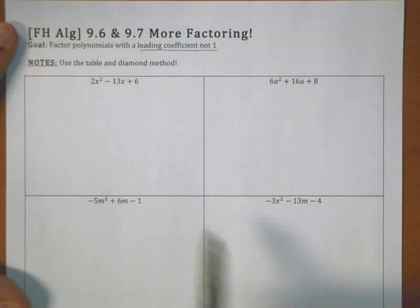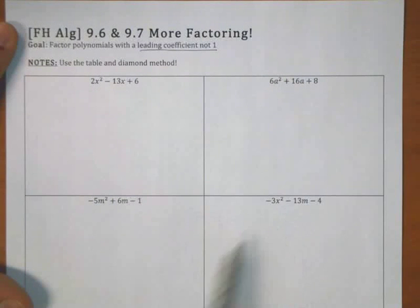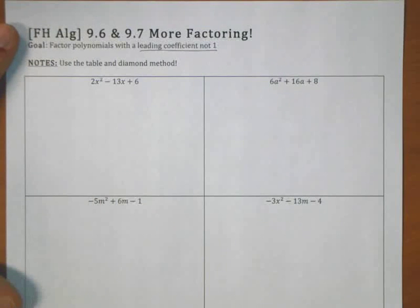In the previous section, every leading coefficient, the coefficient in front of the leading term of the polynomial, was 1, which made life relatively simple and we actually felt some shortcuts. When the leading coefficient is not 1, then we have a situation where this box and diamond method that we began in the previous section is incredibly useful.